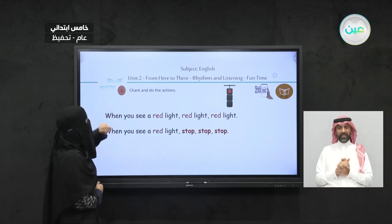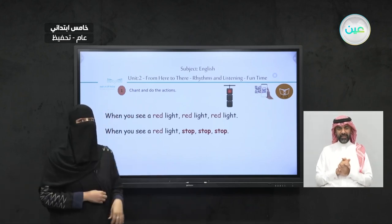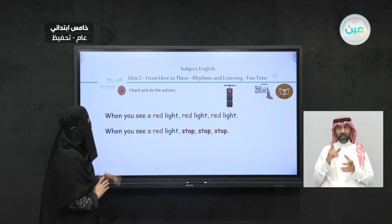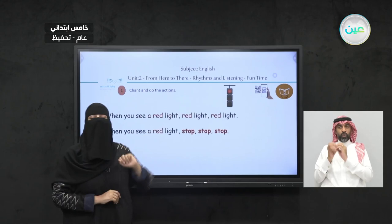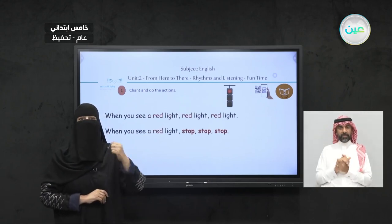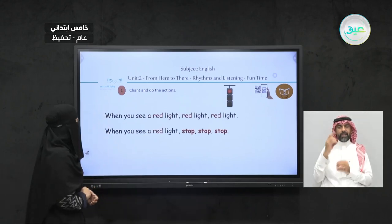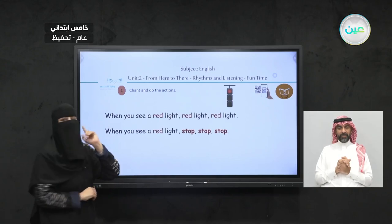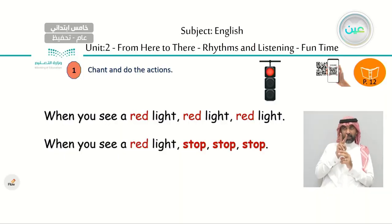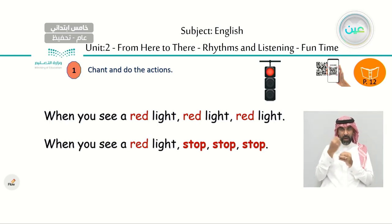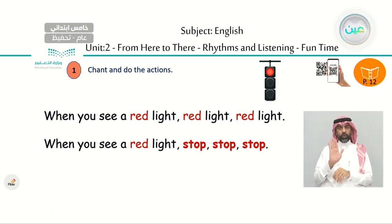Exercise number one: chant and do the actions. Look here at the traffic sign — what color is it? Red, yes, excellent. It's red. Listen: when you see a red light, red light, red light. When you see a red light, stop, stop, stop.